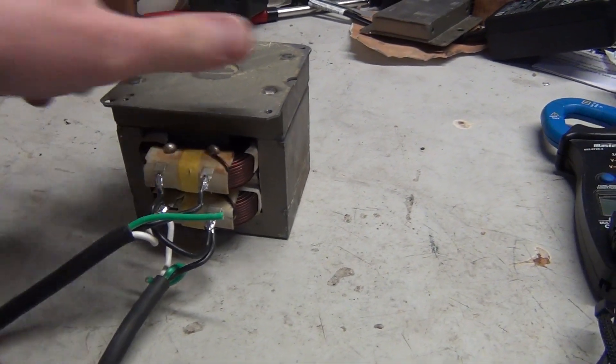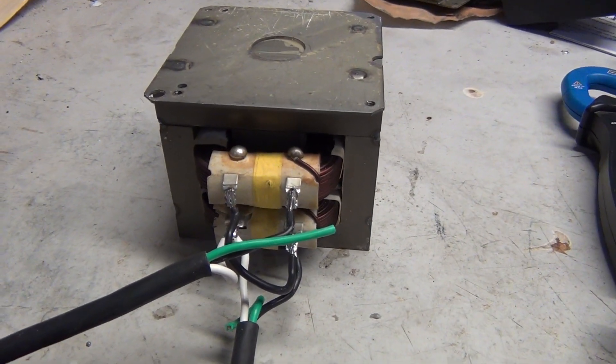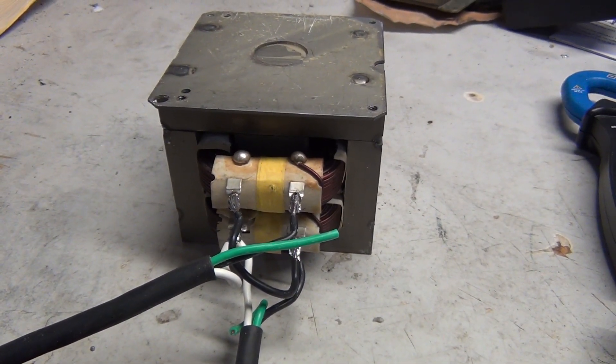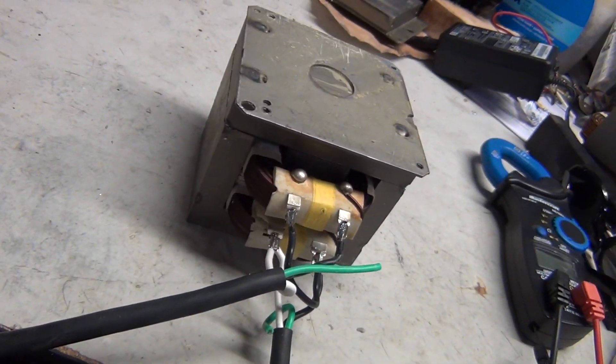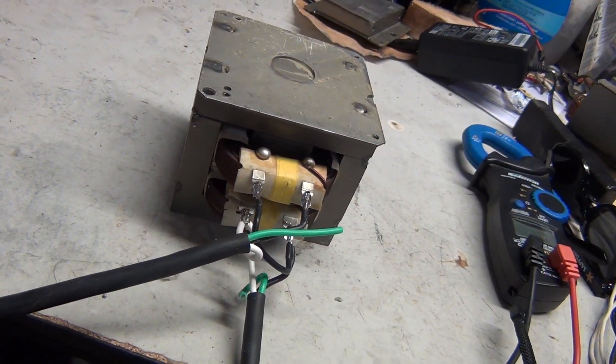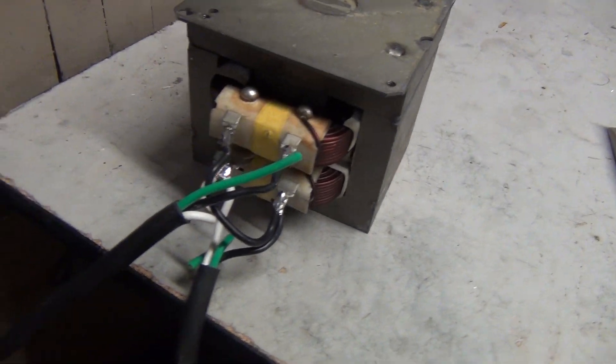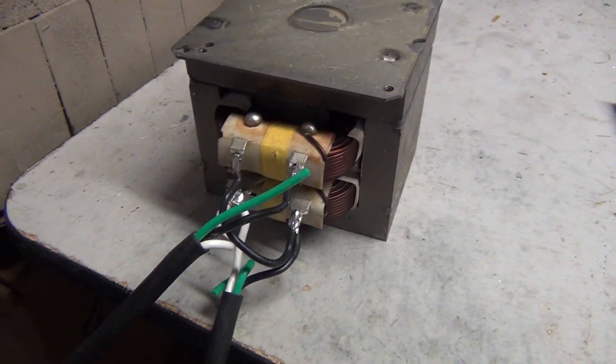Hey guys, welcome back to another episode of DIY or Die. Today I'm gonna show you how to get an easy 120 to 240 volt transformer, and all you need is two microwave ovens. I was asked about a simple way to get 240 volts if you only have 120 volts where you live or where your shop is.